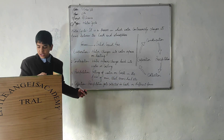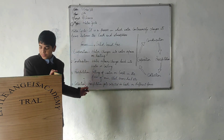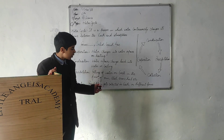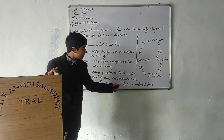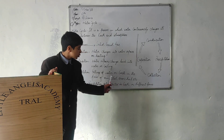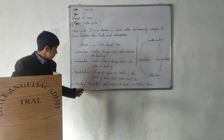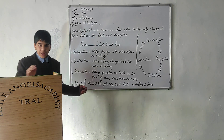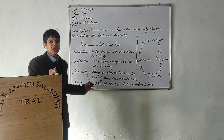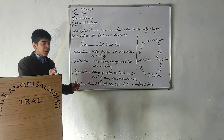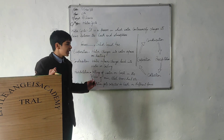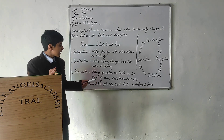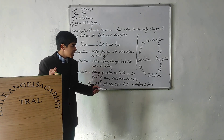The fourth one is collection. When water gets collected at different places on earth in different forms, it is known as collection. These four processes occur back to back in a repeated manner. This is how a water cycle is formed.